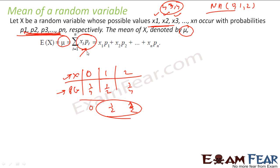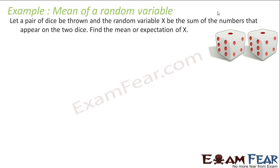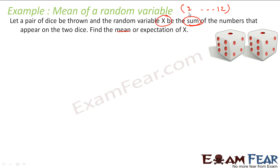We will take some examples to understand this. A pair of dice is thrown and the random variable x denotes the sum of the numbers that appear on the two dice. Find the mean of x. The question is: you throw the dice 100 times and want to find the mean of the sum. The minimum sum can be 1 plus 1 equals 2, and the maximum can be 6 plus 6 equals 12, so x varies from 2 to 12.